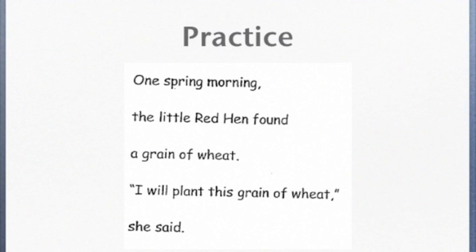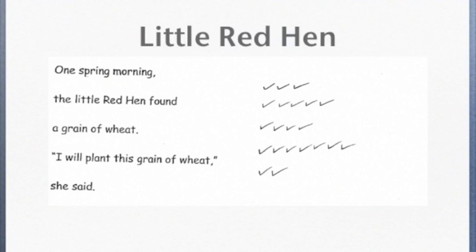Let's practice on section one. I will read the text as if I am the child reading. You record to the right of the text on your little red hen sheet. After each section, we will look at how the running record should look. Ready? Here we go. Begin ticking as I read. One spring morning, the little red hen found a grain of wheat. I will plant this grain of wheat, she said. If you need to pause to catch up before moving forward, please do so. Your running record should look like this. I read the text accurately, therefore, you should have only ticks that replicate the form of the text line by line.